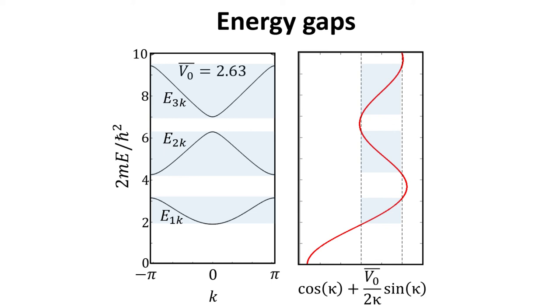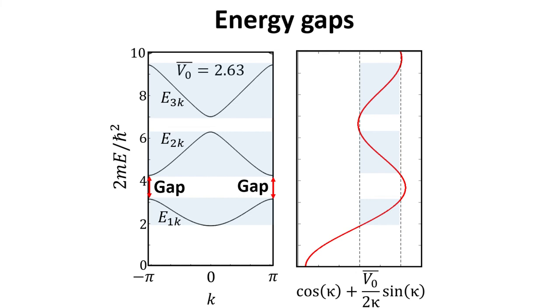Note that the gap in the dispersion relation refers to the smallest energy difference between distinct energy bands. For instance, the gap between the two bands with lowest energies, with band indices 1 and 2, occurs at k equal to pi and minus pi. The band gap between bands 2 and 3, however, occurs at k equal to 0.